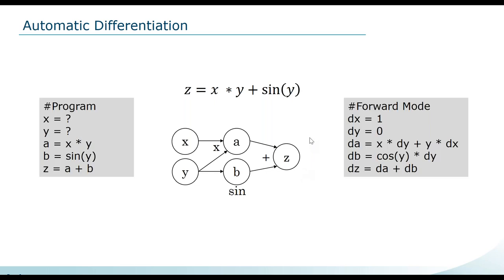In forward mode automatic differentiation, we set the partial derivative of x equal to one and y equal to zero, make a forward pass to get the derivative of z with respect to x, then make a second pass for z with respect to y. The number of passes equals the number of parameters. This is efficient when the number of input parameters is small compared to output parameters.